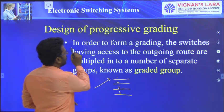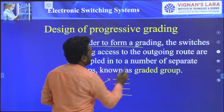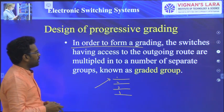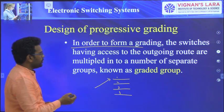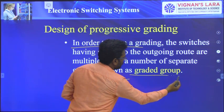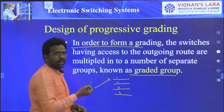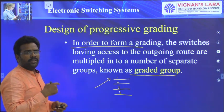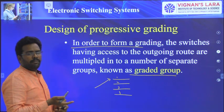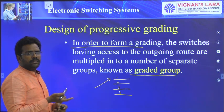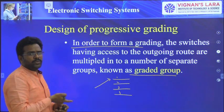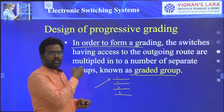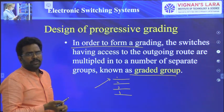In order to form a grading, the switches having access to the outgoing trunks are allocated to a number of sublet groups known as graded groups. Out of 20 trunks with availability 10, we have taken 2 groups. We call those 2 groups as graded groups. So here we also have to find the value of G — the graded groups count.